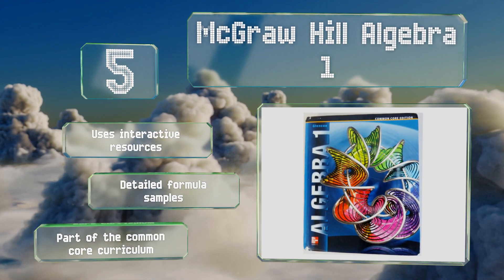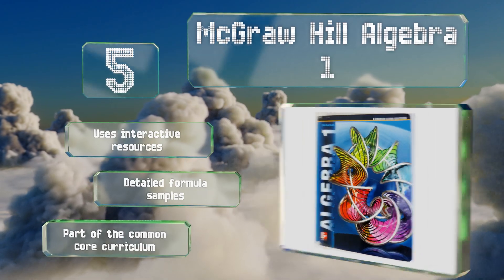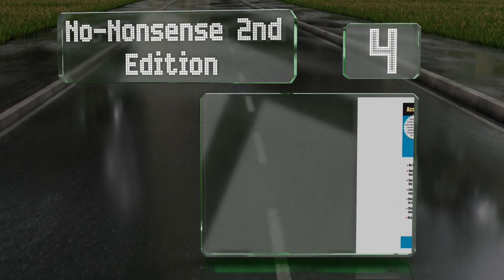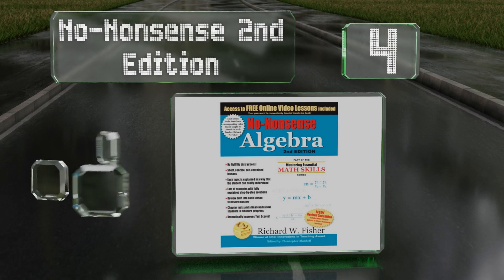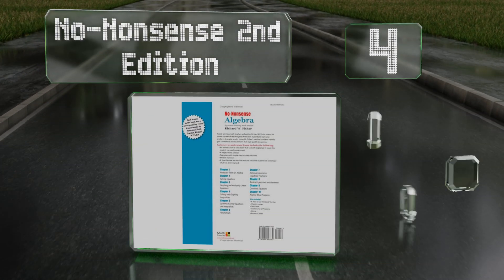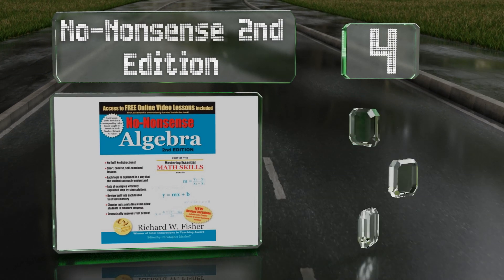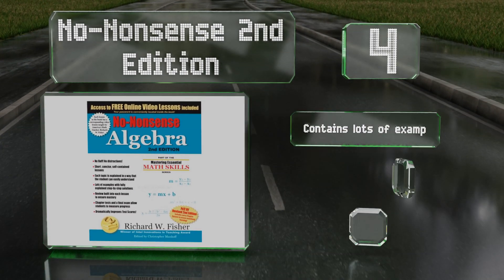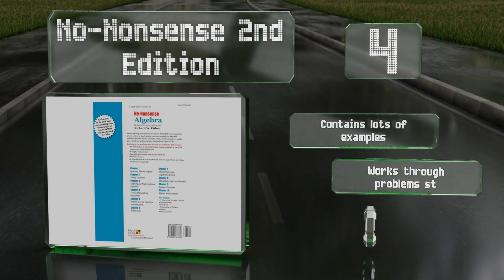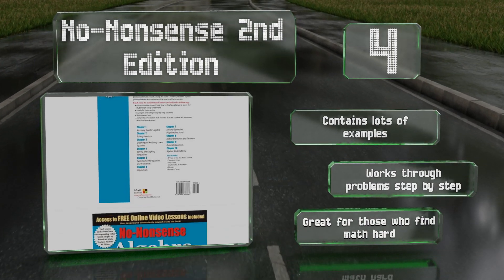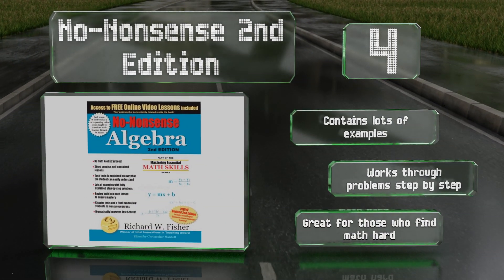At number four, the no-nonsense second edition reviews pre-algebra, expands beyond basic knowledge, and allows students to work their way up to more advanced material. The lessons are concise and simple with clear explanations to facilitate independent learning. It contains lots of examples and works through problems step by step. It's great for those who find math hard.